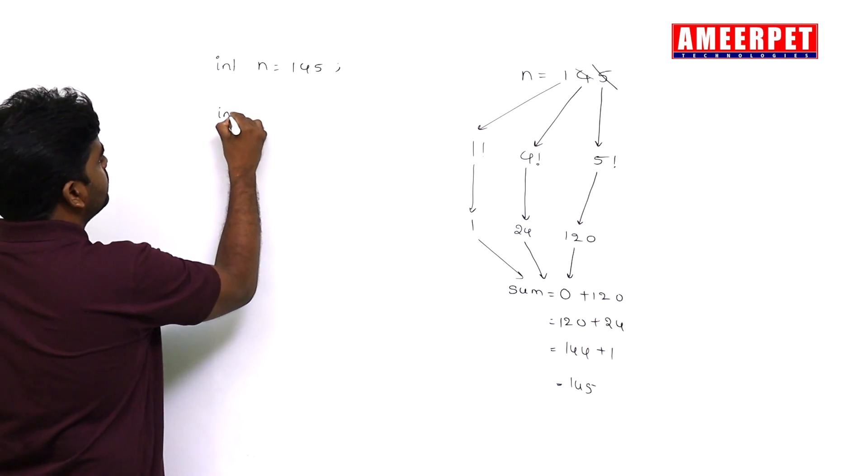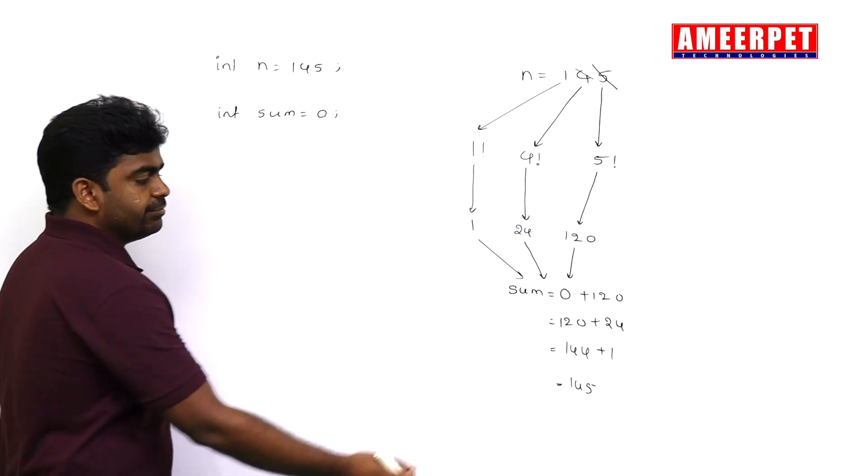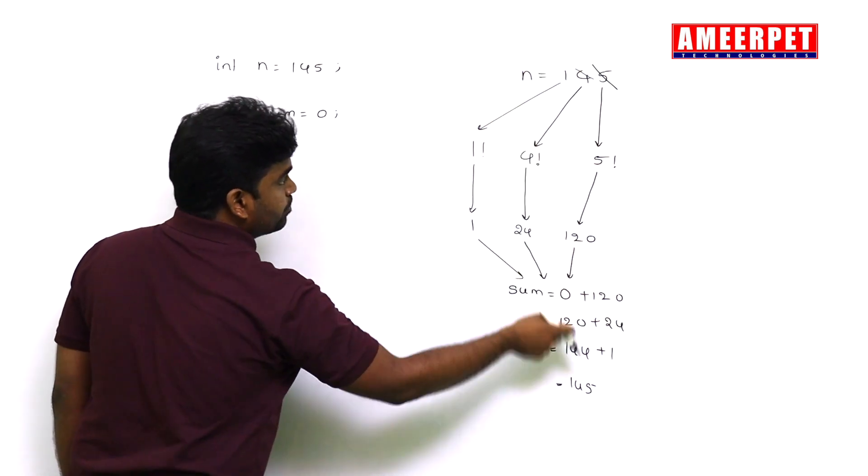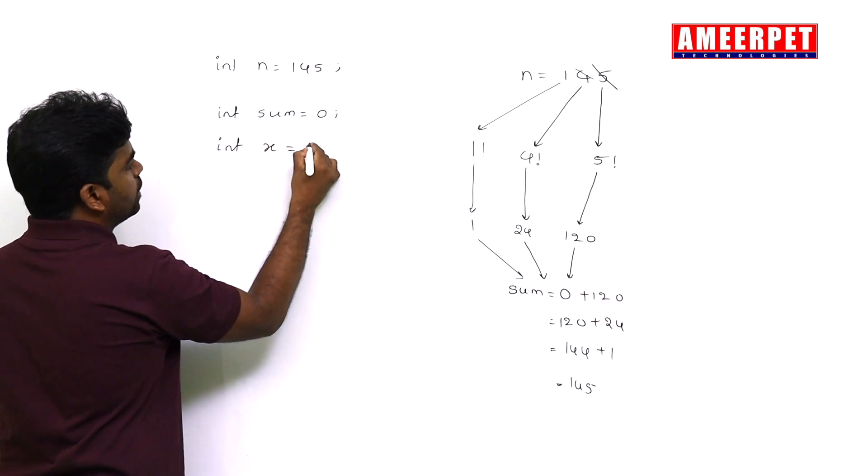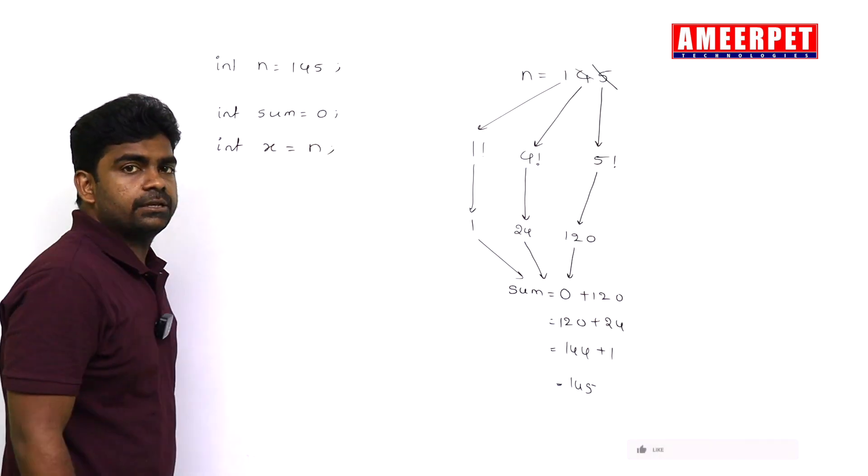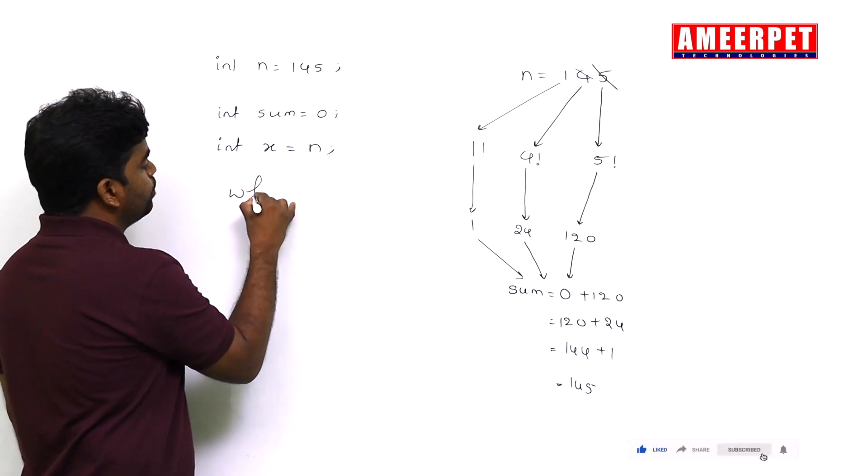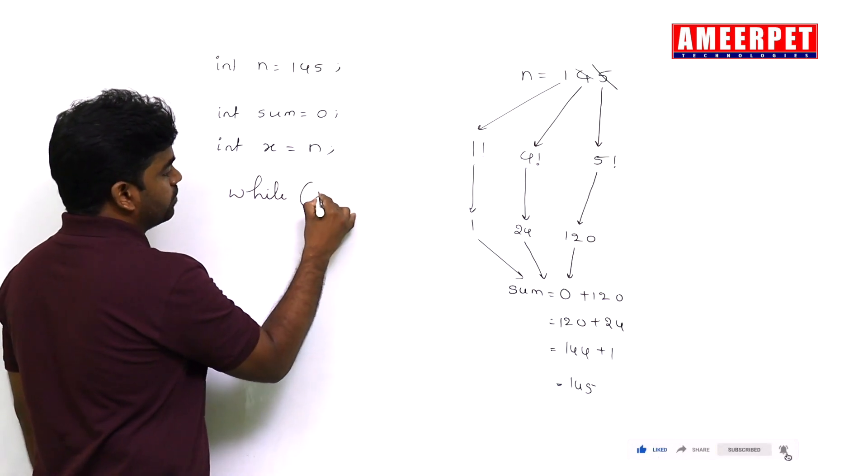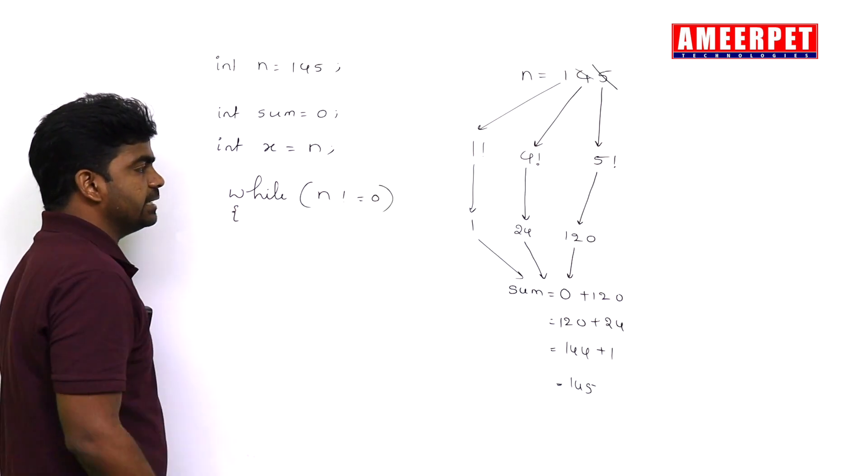To find the sum, I am declaring the variable integer sum equal to zero. Finally, for comparison with n, I keep the n value into one variable called x. X value is now 145. Now repeating the loop until the n value becomes zero as we keep on repeating the loop.